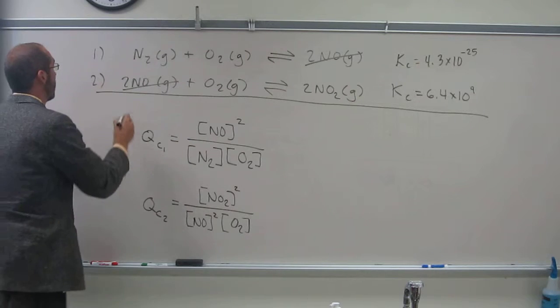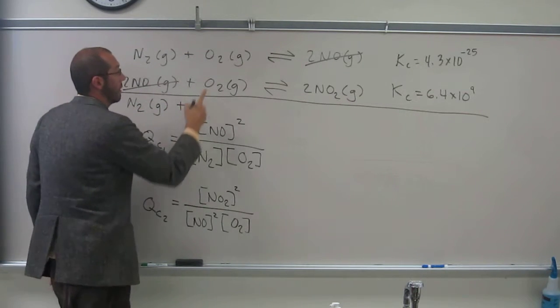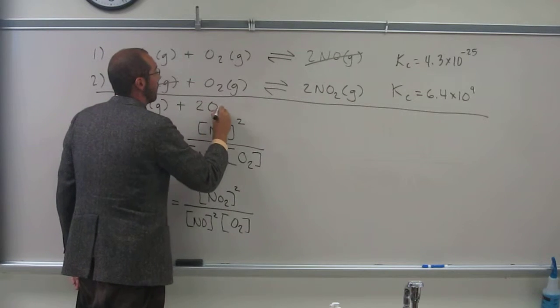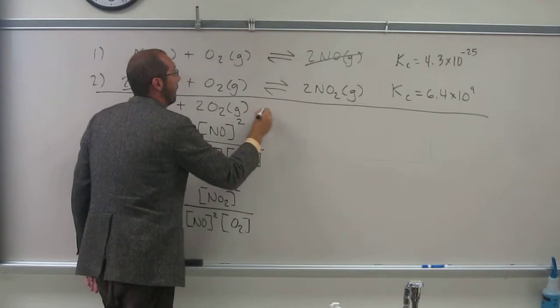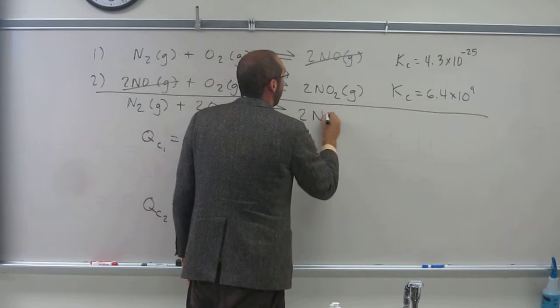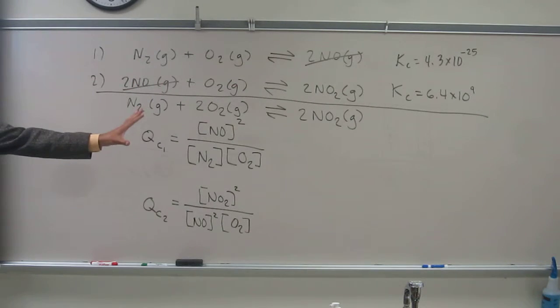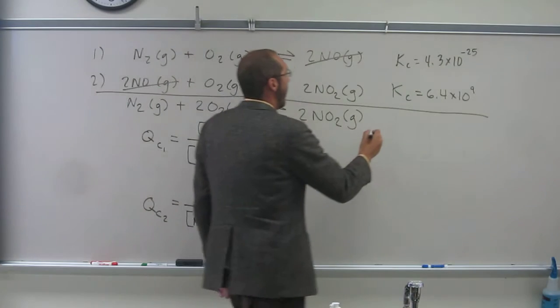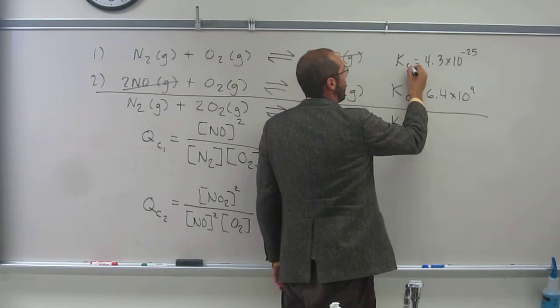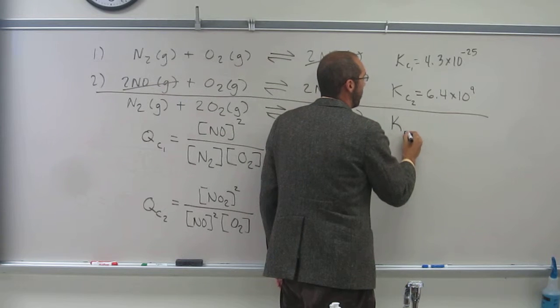Let's add it up now. So N2 gas plus 2O2 gas goes back and forth to 2NO2 gas. Is everybody okay with figuring out what the overall reaction is? This K here, so we'll say KC1, KC2. This is going to be K of the overall.